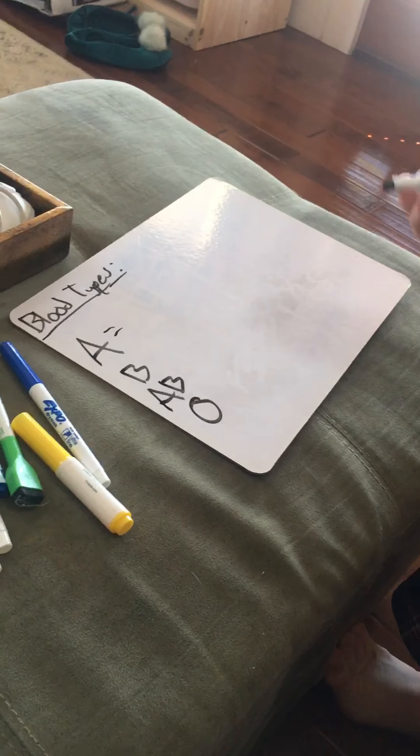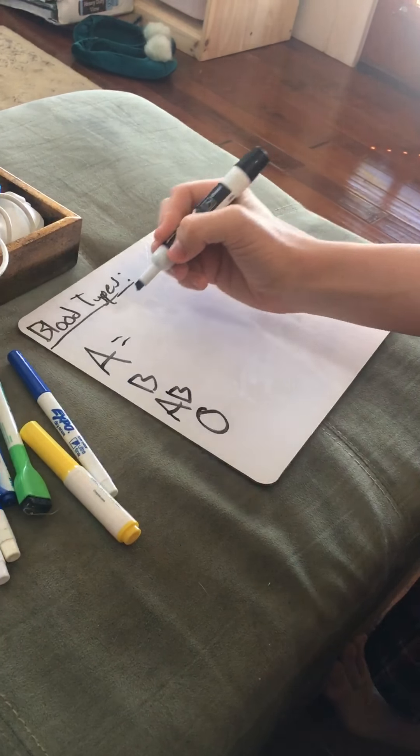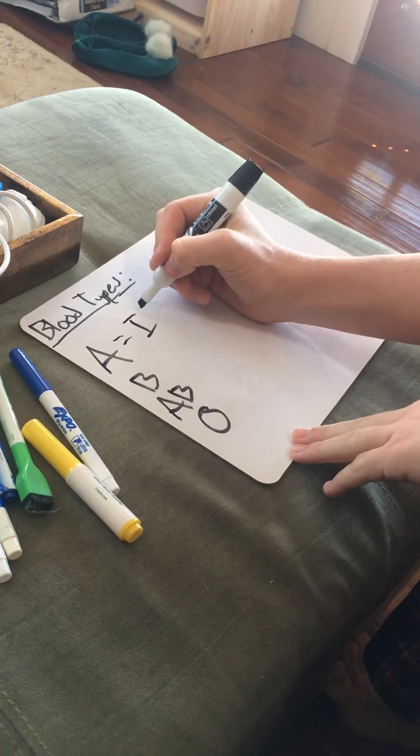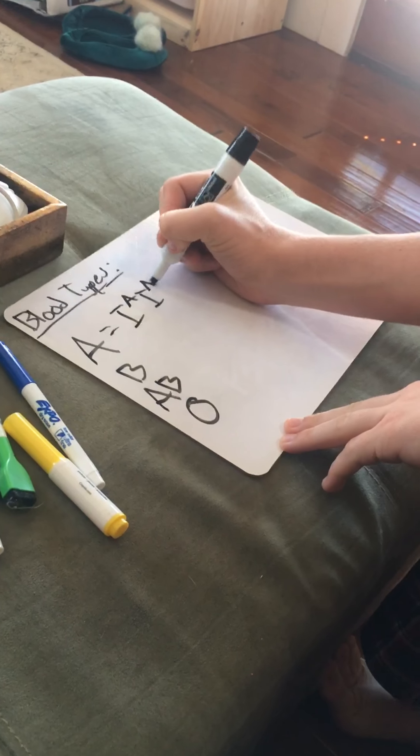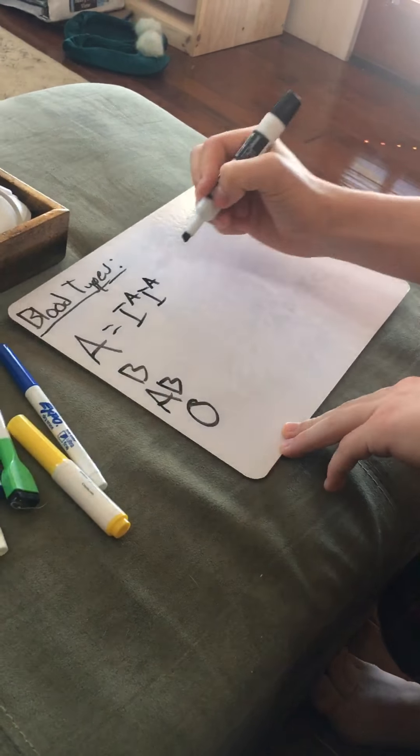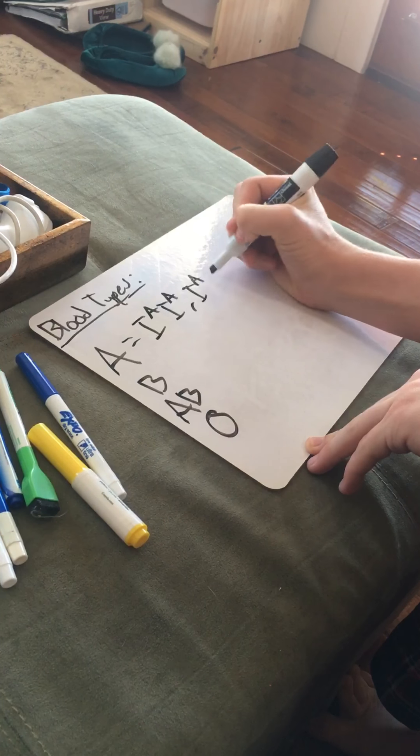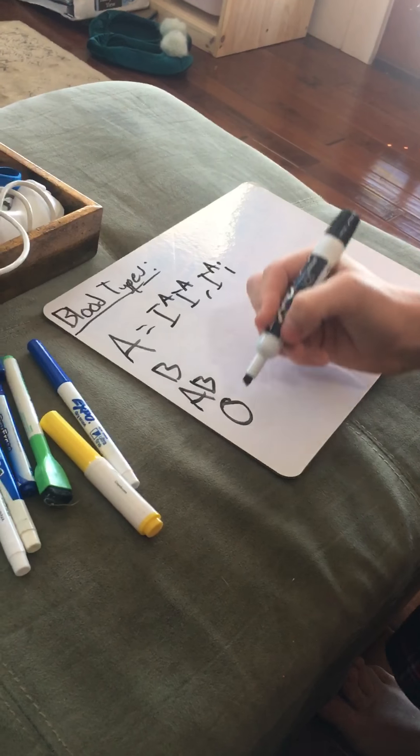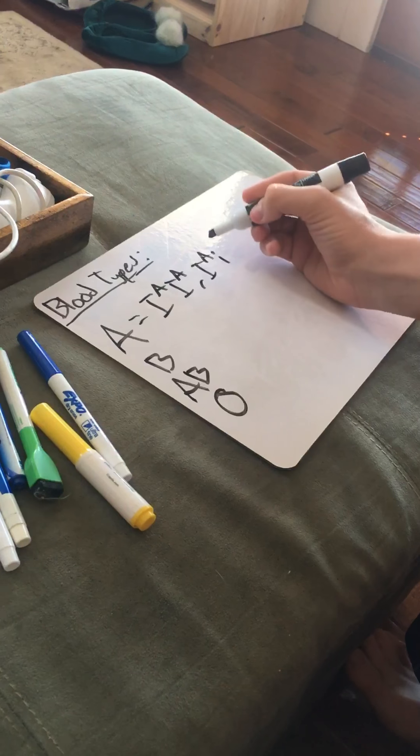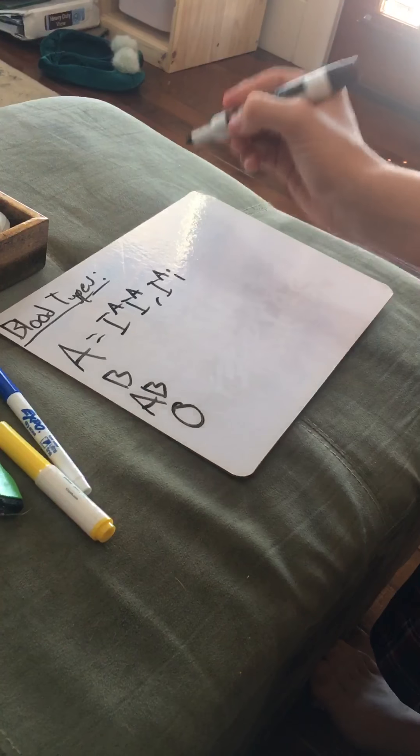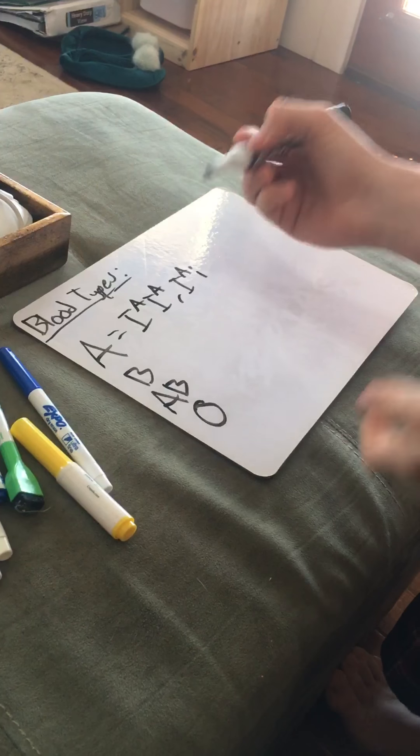So basically if you're A in our family, you can either have homozygous A, which means IA IA, or you can be heterozygous A, which can be IA i. So that means you have part of an O in it, but since the A trait is dominant, you'll still show the A trait.